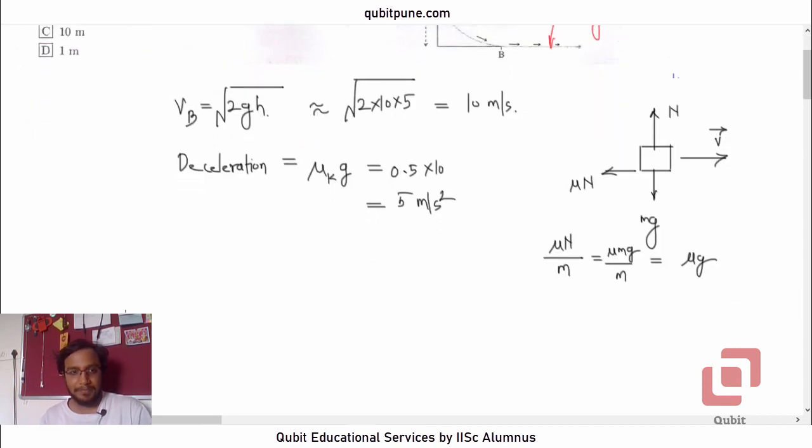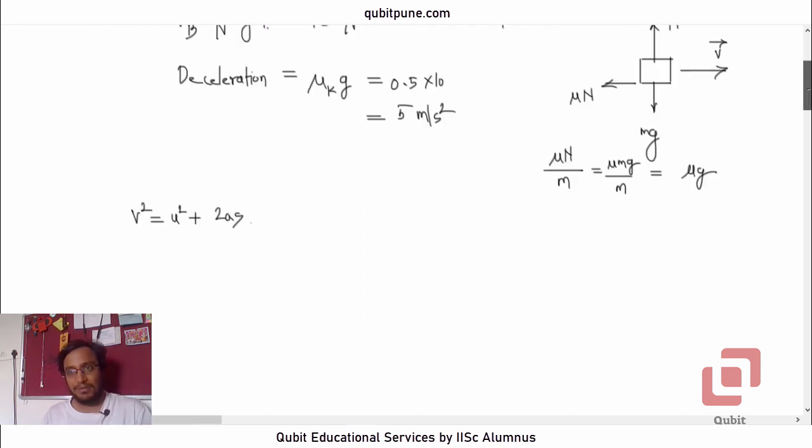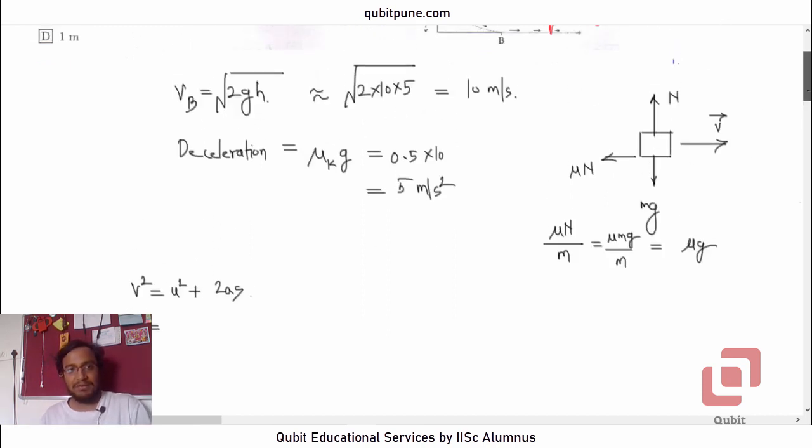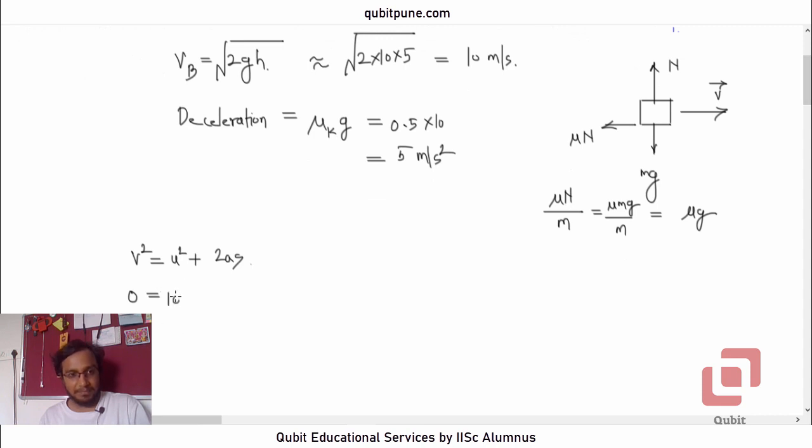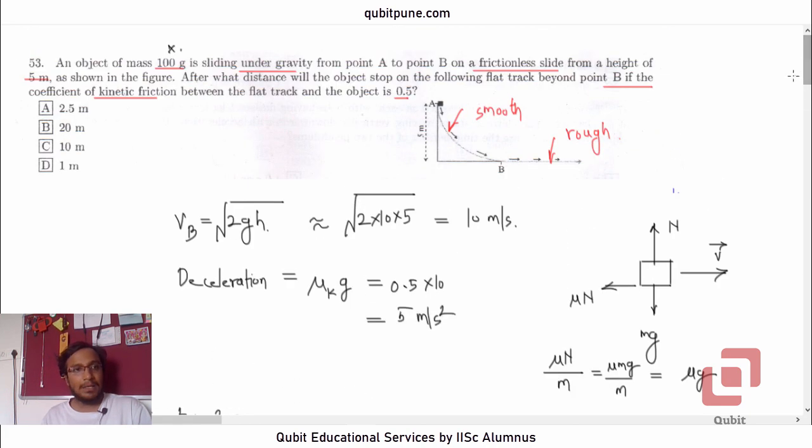Now the formula is simple. Use v squared is equal to u squared plus 2 as. Because acceleration is constant, it is a uniformly accelerated motion. Final speed 0, initial speed 10, 10 squared is 100 plus 2 a. So now in this case, a is negative. Right? So negative 2, a is 0.5 into 10 into s. S is what we want. So s is equal to 100 upon 10 into 1. So that's 10 meters. Option c.